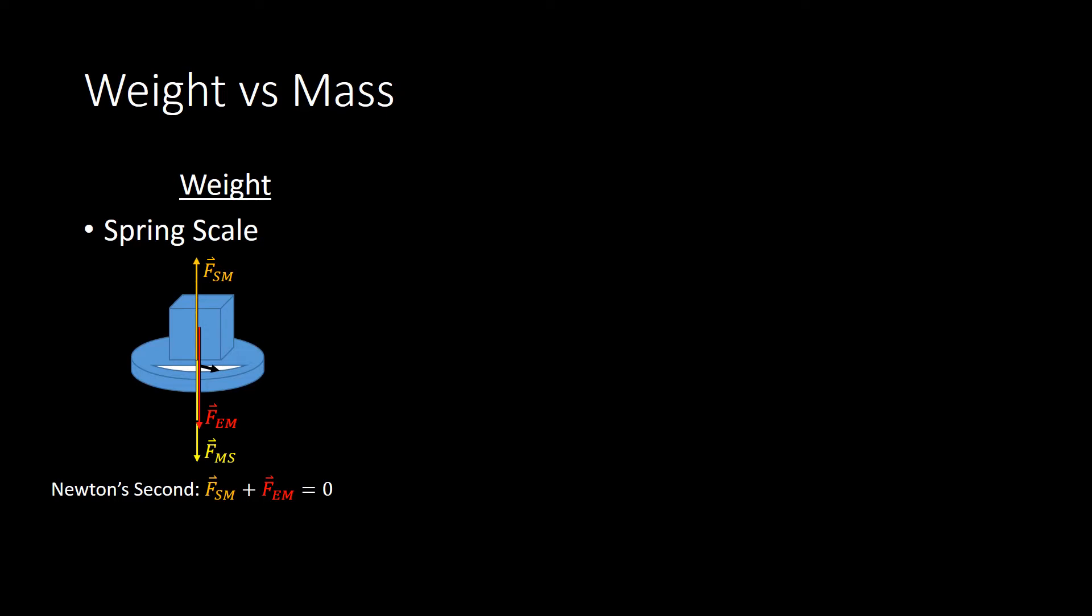We'll say anything pointing up is positive, and anything pointing down is negative. Using that convention, Newton's second law just becomes this statement here that F_sm minus F_em is equal to zero. Now, of course, we can easily rearrange and get F_sm is equal to F_em.